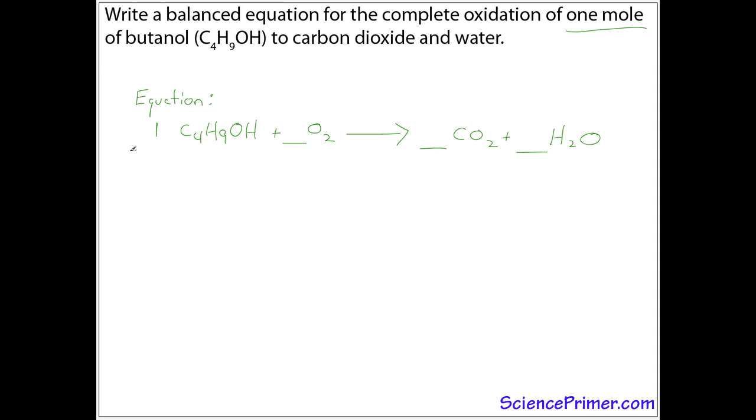Since there are three different types of atoms in this equation, we're going to do this in three steps, one time per each atom. We'll start with carbon, and with carbon we are going to add CO2, carbon dioxide, to the product, or right side of the equation, to account for all of the carbon present in the reactants, which in this case is the butanol.